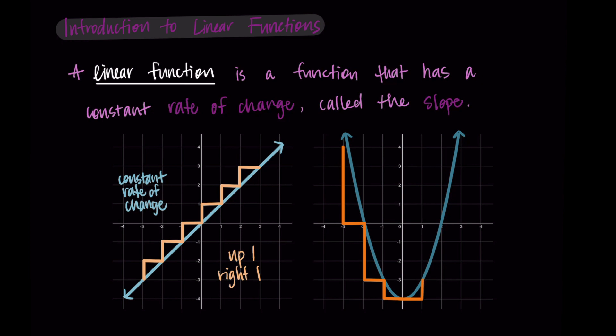And then we start going to be increasing. So that first part was decreasing and now we're increasing. So we'd have right one up one, right one up three, right one up four, etc. So here this graph has a changing rate of change.